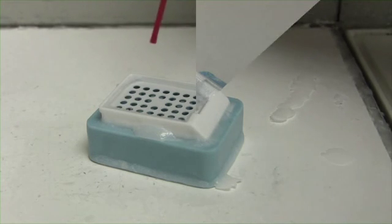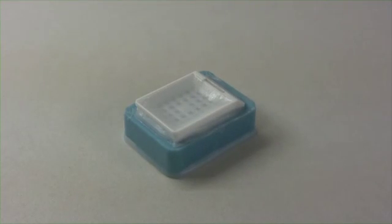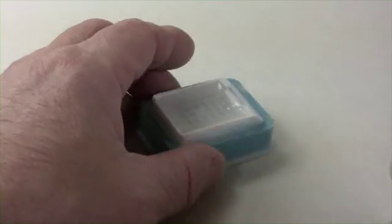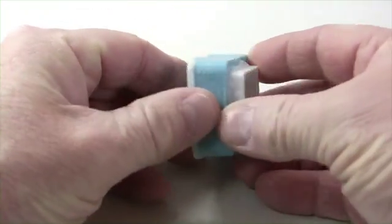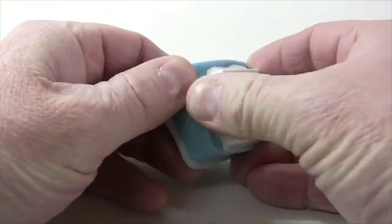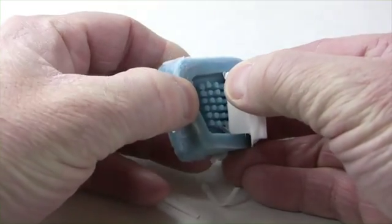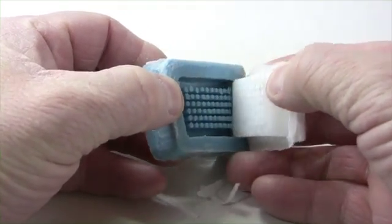Before I pull apart the array mold and the paraffin block, I like to wait till they are both at room temperature. The array mold will be softer and more flexible at room temperature and the cores will last longer. Pulling them apart when the rubber is stiff and cold could break some of the core rods out of the array mold.